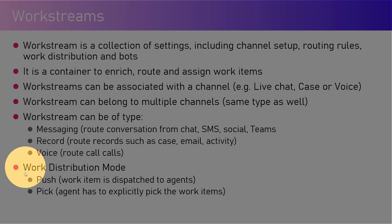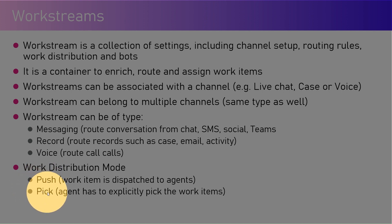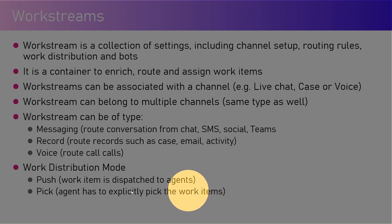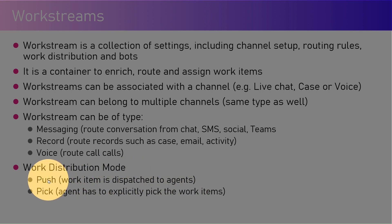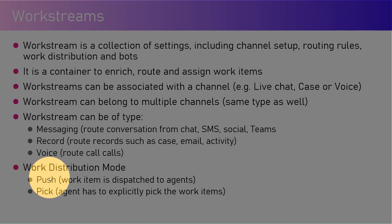Work distribution mode defines how work is distributed to various agents — whether it is a push or a pick. Pick means the agent has to explicitly pick the work item from the queue, so it's a manual mechanism. Push is somewhat automated — the work item is dispatched to agents based on some attributes.